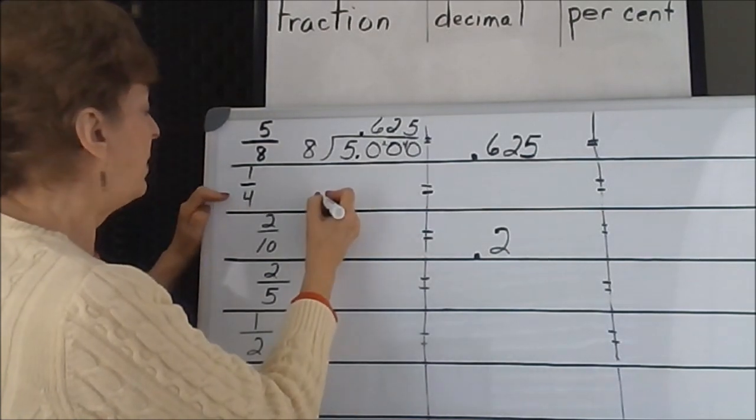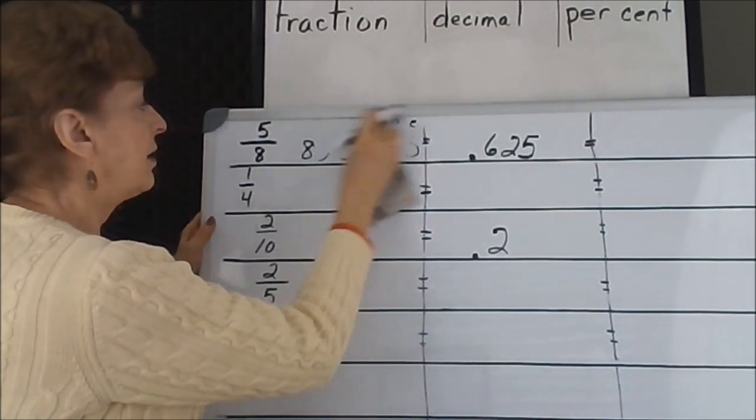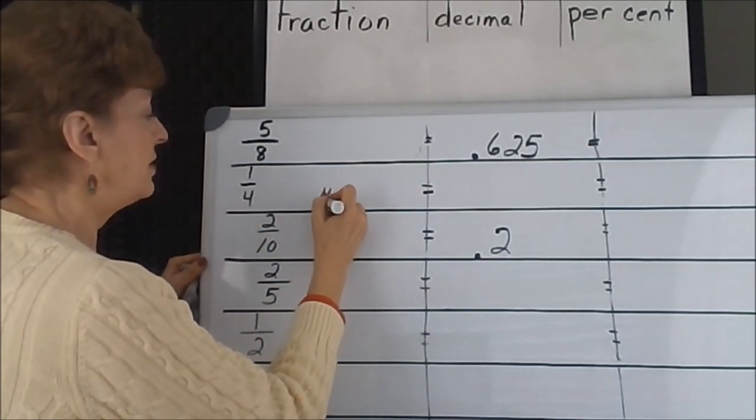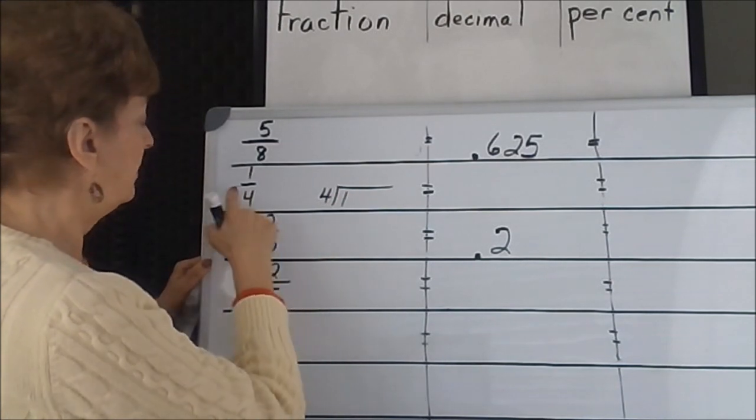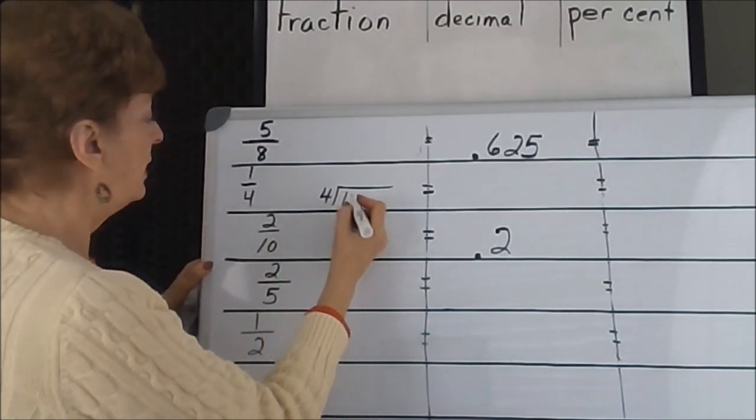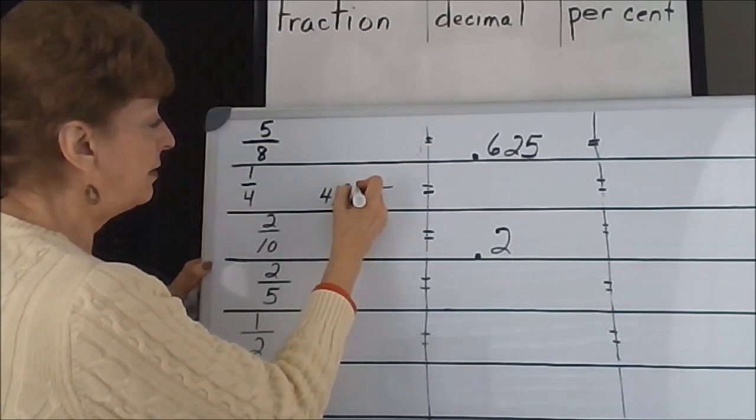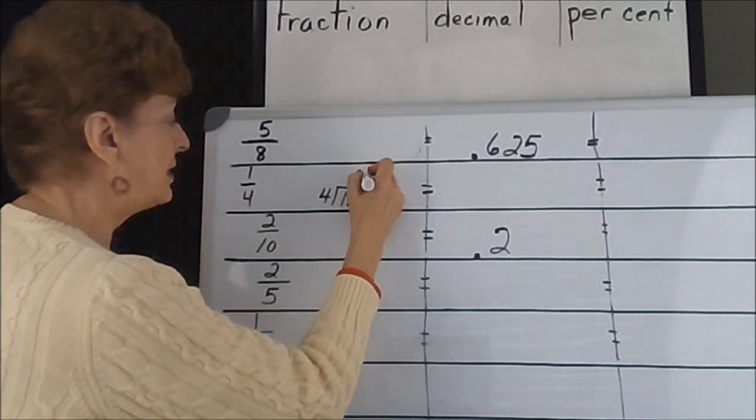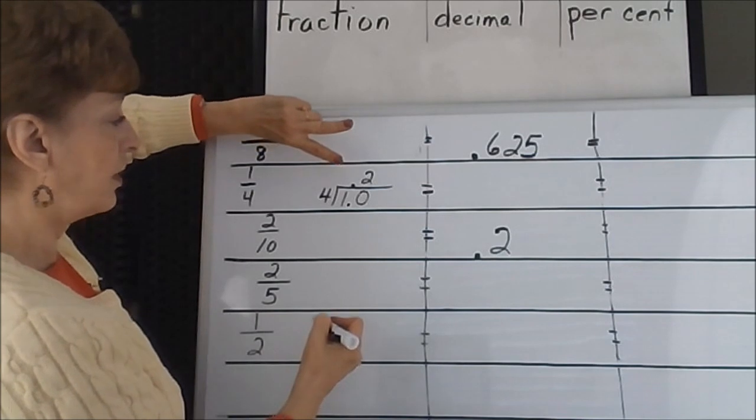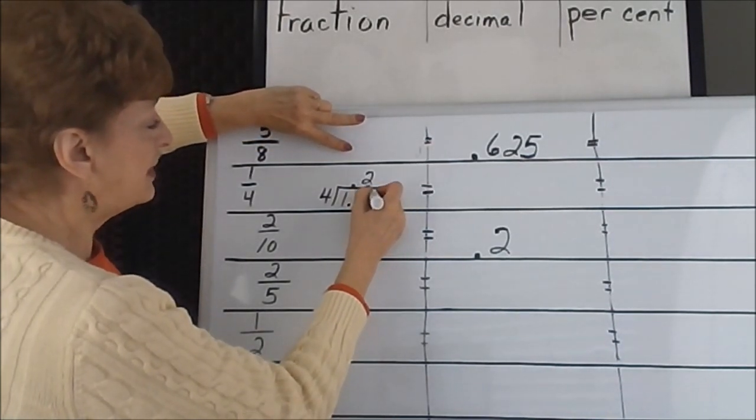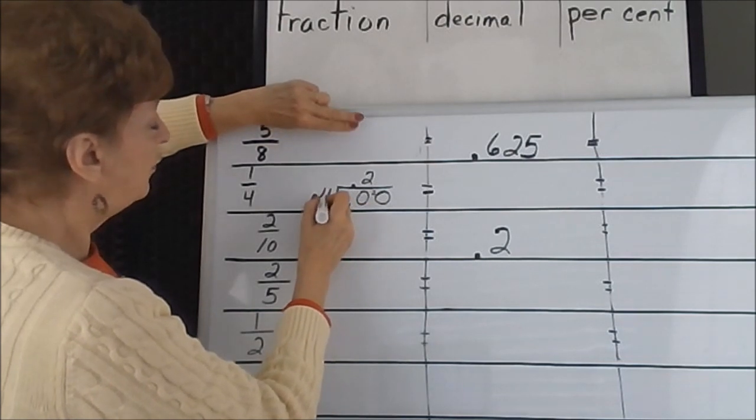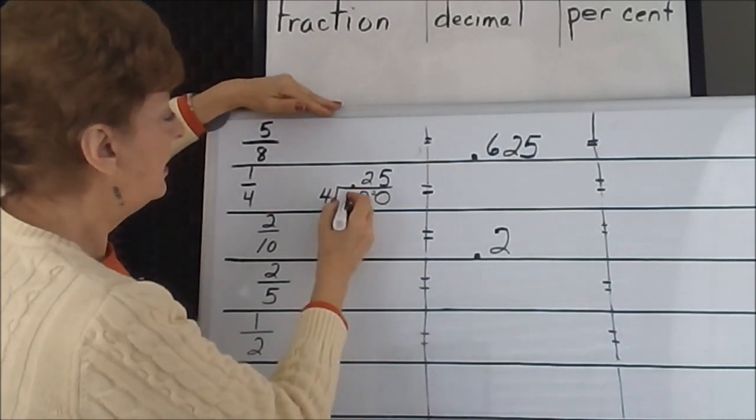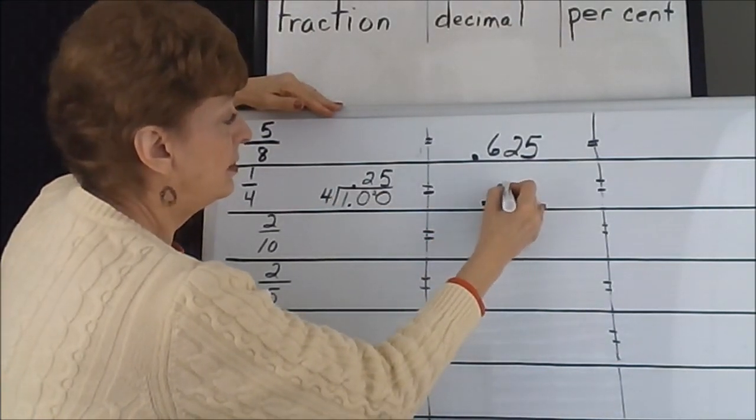1 fourth. Basically, what we're saying here is 4 divides into 1. That's what it means. It's 1 divided by 4. Put on a decimal point that goes straight up into the answer. 4 divides into 10 two times with 2 left over. I'm going to have to put a 0 here to accept my 2, the remainder. 4 goes into 20 five times. And that's all. It's done. There is your decimal number, 0.25.